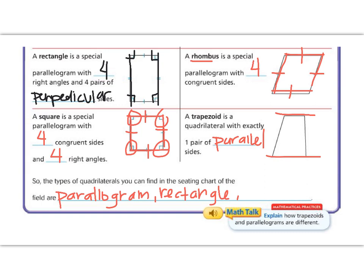We saw a rhombus in the baseball diamond in the middle. We saw a square. And we saw trapezoids.